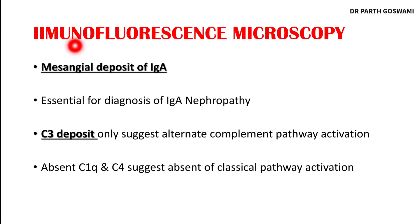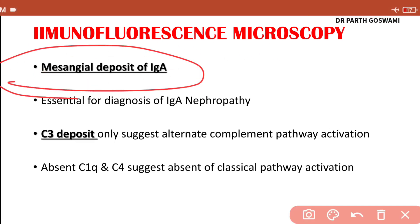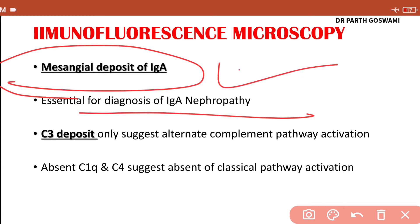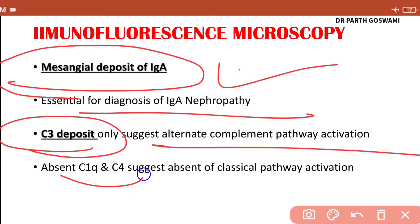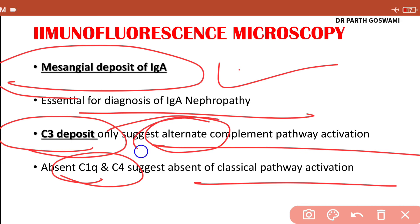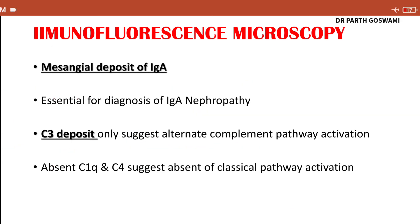On immunofluorescence microscopy, you can observe mesangial deposits of IgA. Immunofluorescence microscopy is essential for diagnosis of IgA nephropathy. The hallmarks are mesangial deposits of IgA1 and mesangial proliferation. There is also C3 deposition in the glomerulus, indicating activation of the alternate complement system. C1q and C4 are absent, confirming that the classical complement pathway is not activated — it is mainly the alternate complement pathway.